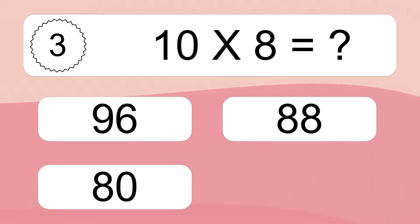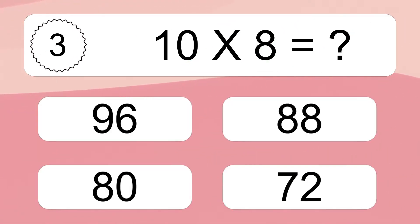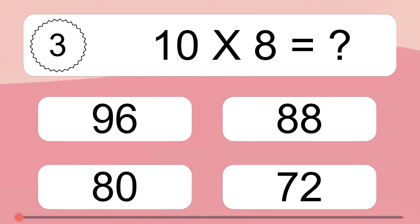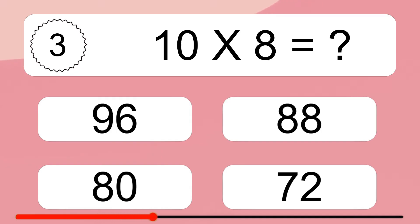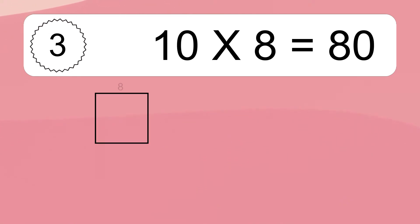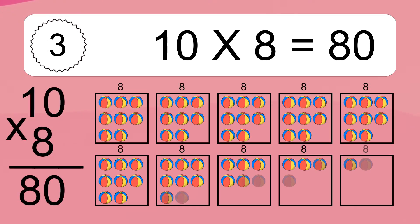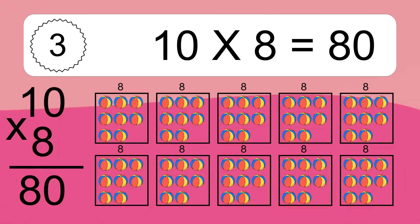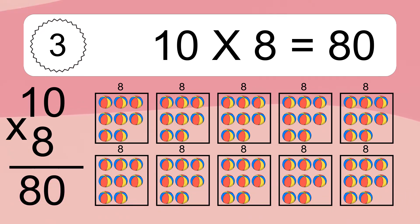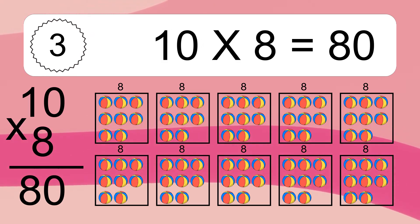Ten times eight equals what? Ten times eight equals eighty. We have ten boxes and each box has eight colorful balls inside. If you count all the balls in all the boxes together, you will have ten times eight balls. This equals eighty balls.